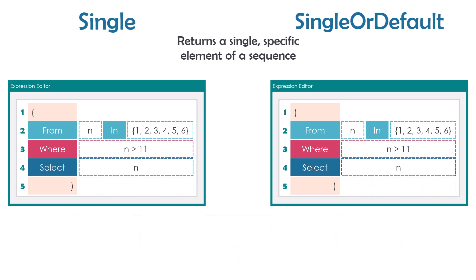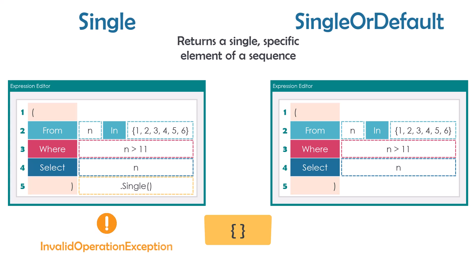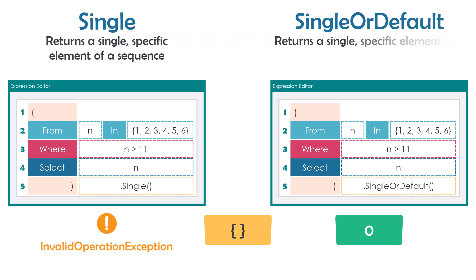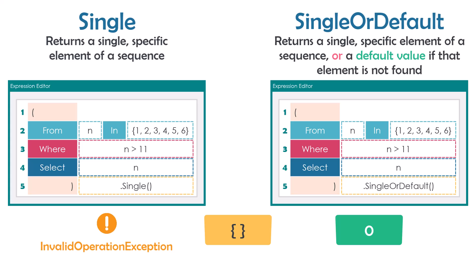Now assume I have a condition to get the numbers which are greater than 11. The result of the query is empty because no number is greater than 11. Using Single operator on an empty sequence throws an exception of type InvalidOperationException because there are no elements. But using SingleOrDefault on the same empty sequence returns zero with no exception thrown. This is because the query is for an integer array, and the default value of integer is zero — so SingleOrDefault returns the default value when the sequence is empty.